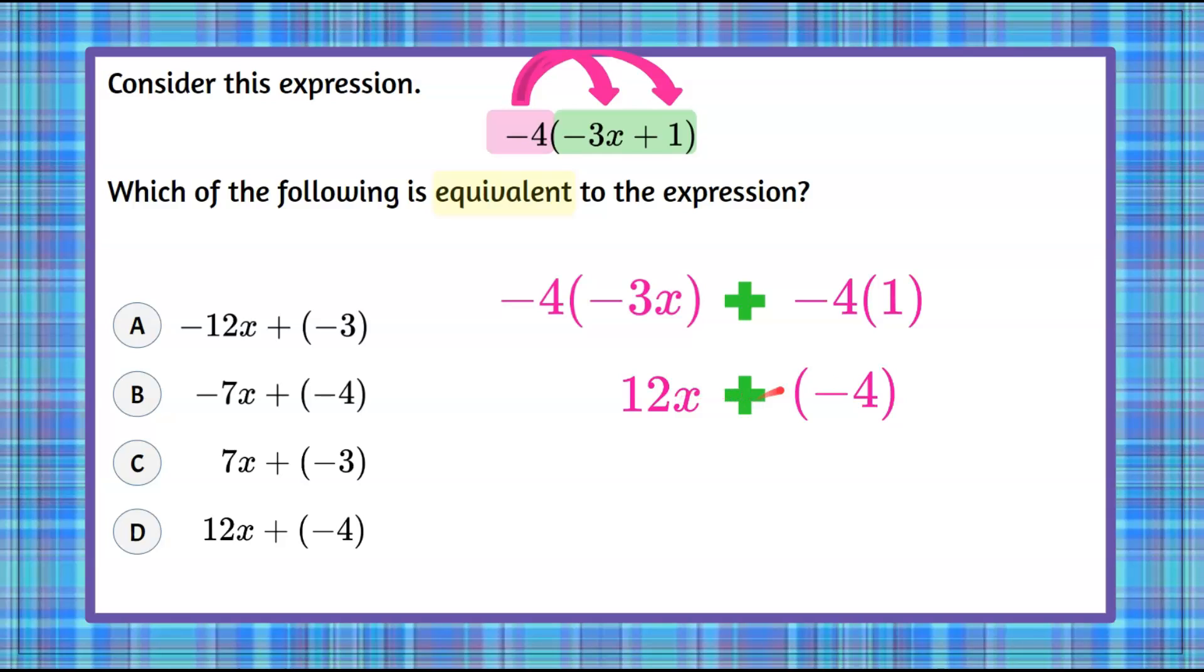So we have 12x add negative 4 and when we look at our answer choices we can see that that is answer choice D. So this is the first way that I would show you. We call this distributing in the linear fashion.